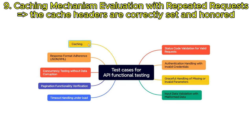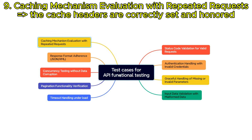Caching mechanism evaluation with repeated requests: evaluate the API's caching mechanism by making repeated requests and verifying that the cache headers are correctly set and honored.